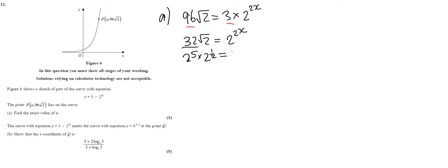32 is two to the power of five, and that's multiplying two to the power of a half — because that's the square root of two — and that is all equal to two to the power of two x. We've got the same base throughout. Remember: when we multiply two things with the same base we add the powers, so five plus a half equals two x.